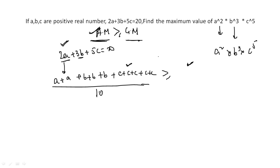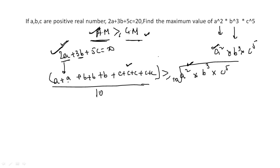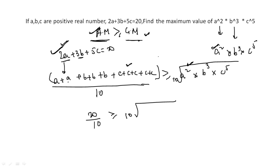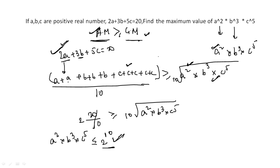When you take the product of all those elements on the right side, you get a² × b³ × c⁵. For the geometric mean we need the 10th root. So we have: (2a + 3b + 5c)/10 ≥ (a² × b³ × c⁵)^(1/10). That gives us 20/10 ≥ (a² × b³ × c⁵)^(1/10), so 2 ≥ (a² × b³ × c⁵)^(1/10). Therefore a² × b³ × c⁵ ≤ 2¹⁰. This is Method 1.